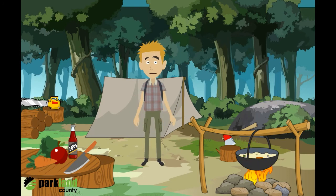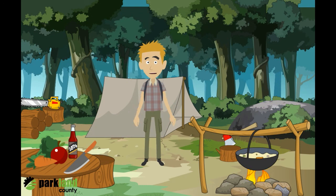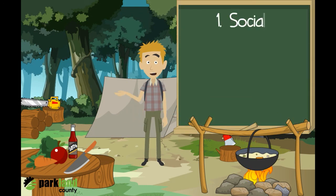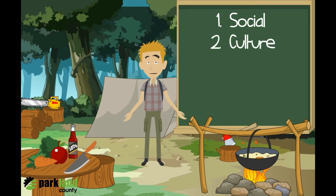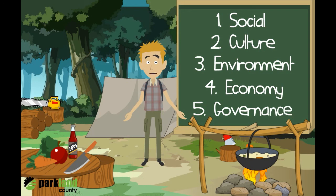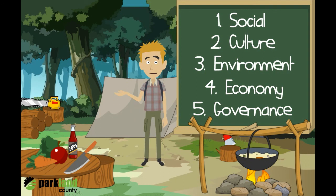Municipal governments help their communities to become more sustainable by promoting and balancing five major issues, making sure that no one issue gets too much more attention than the others. The first issue is the social dimension of the community. The second is the community's culture. The third is the community's natural environment. The fourth is the community's economy. And the fifth is the governance of the community. Together, these five issues are called the five dimensions of community sustainability.